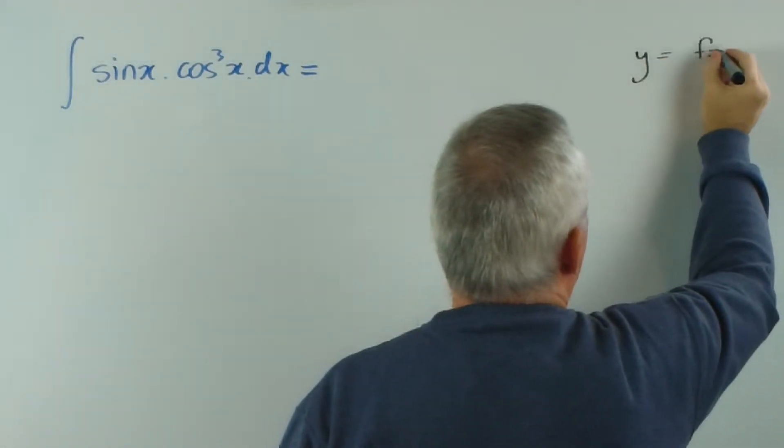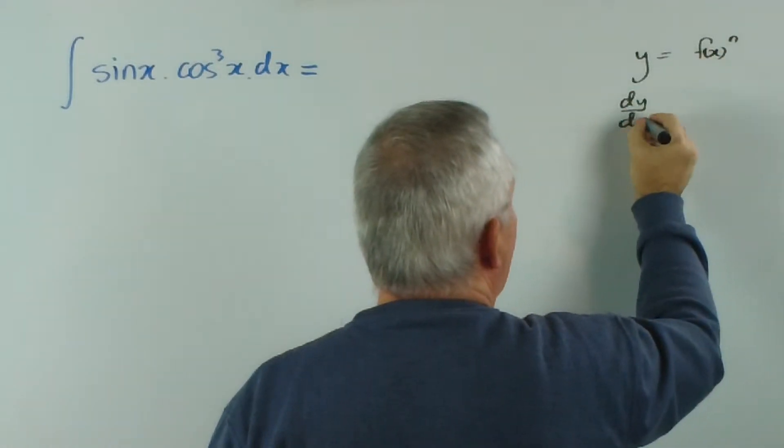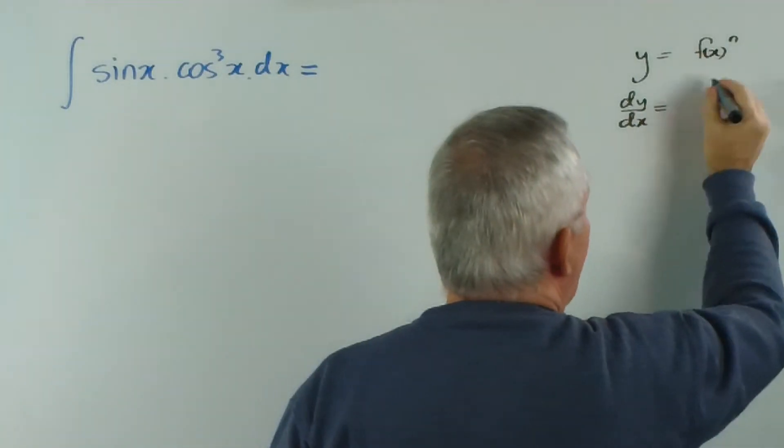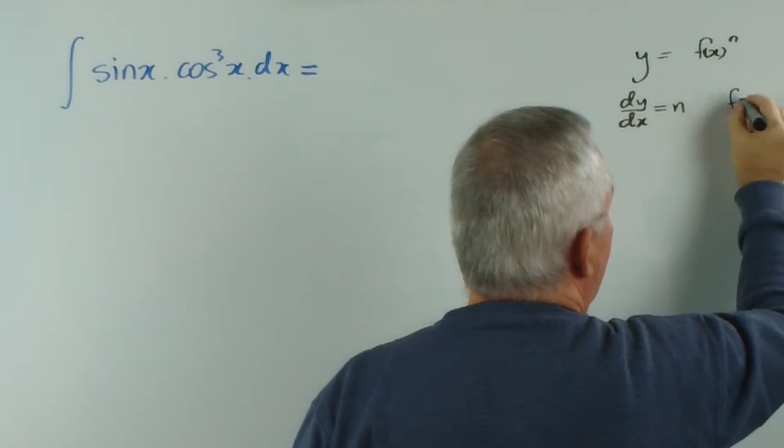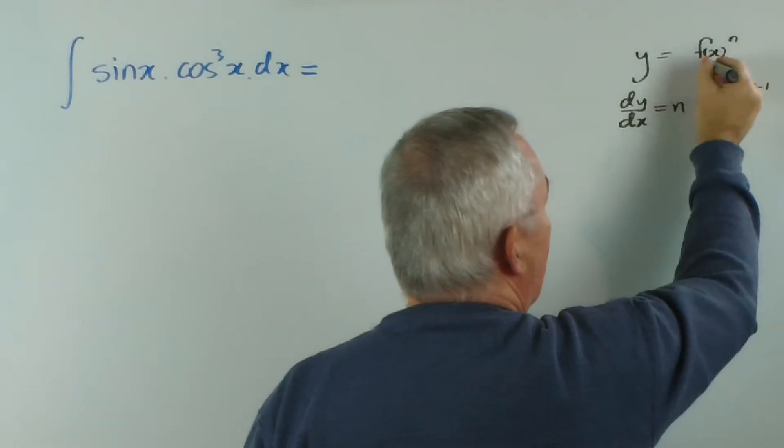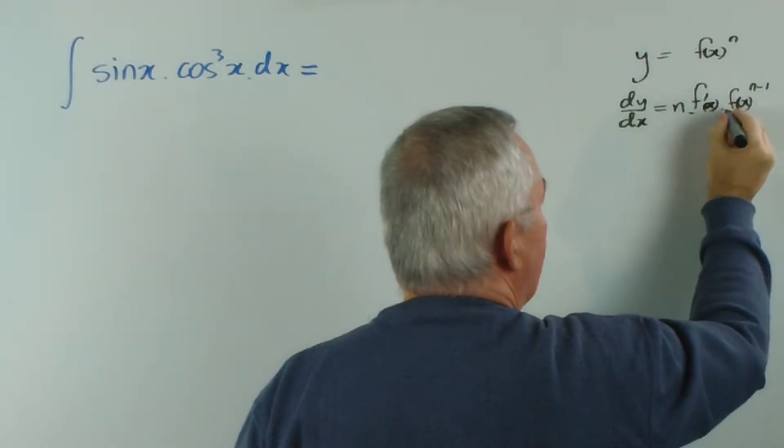If we have a function to a power and we take its derivative, we first of all get, using the chain rule, we treat it first like x to the n and we get n times x to the n minus one. But then, being a chain, we have to multiply by the derivative of the function inside, which is f prime of x.